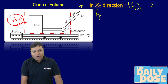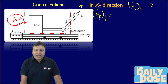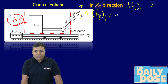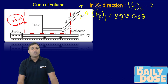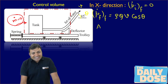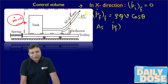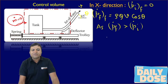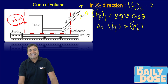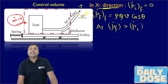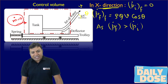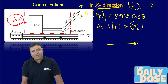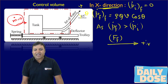The final momentum of the fluid in the x-direction — calling the deflection angle theta = 45° — will be rho × Q × V × cos(theta). Since the final momentum of the fluid is greater than the initial momentum in the x-direction, there is a net force exerted on the fluid in the positive x-direction.